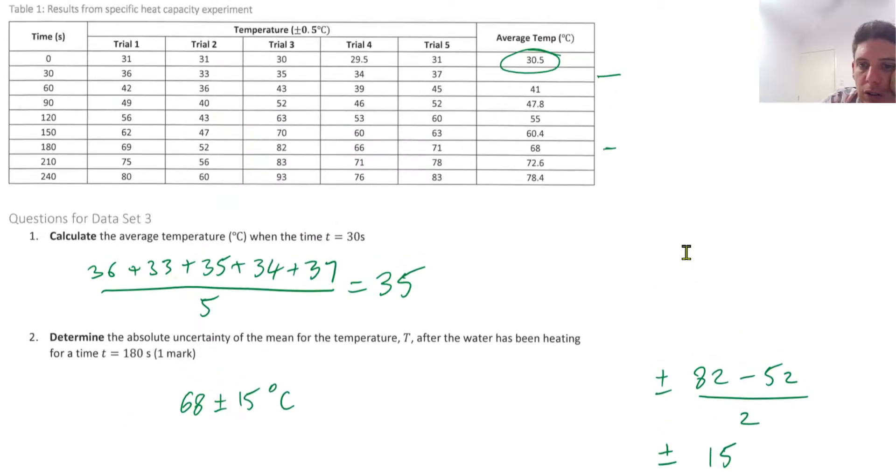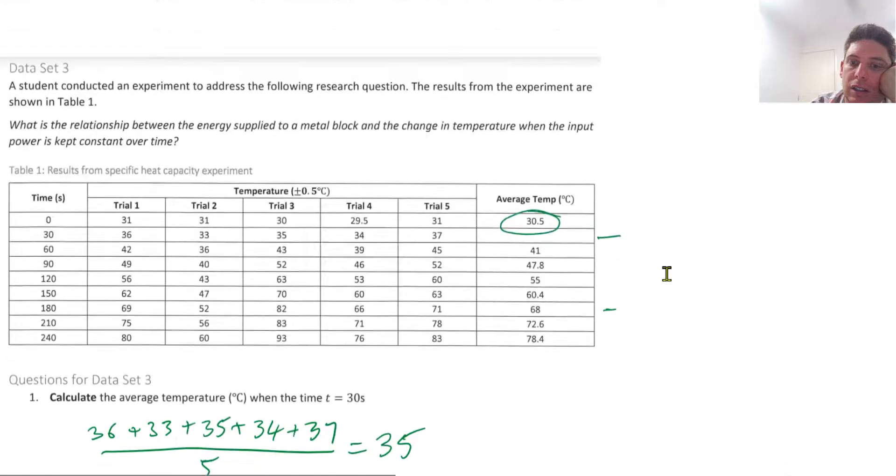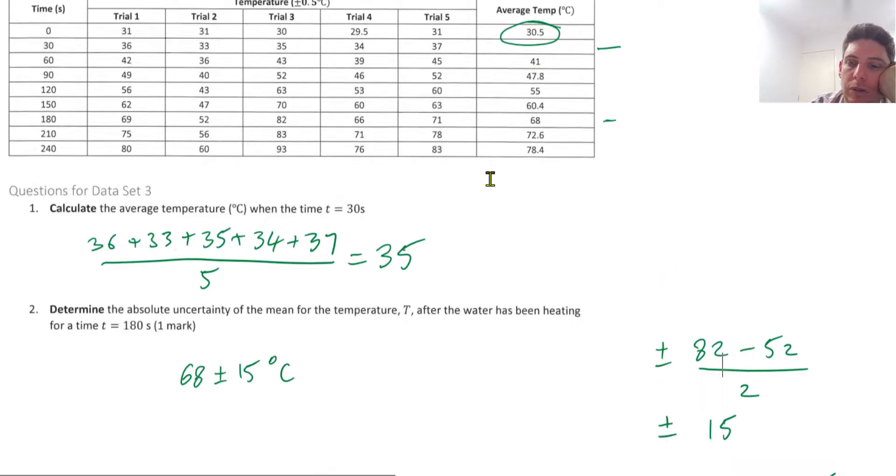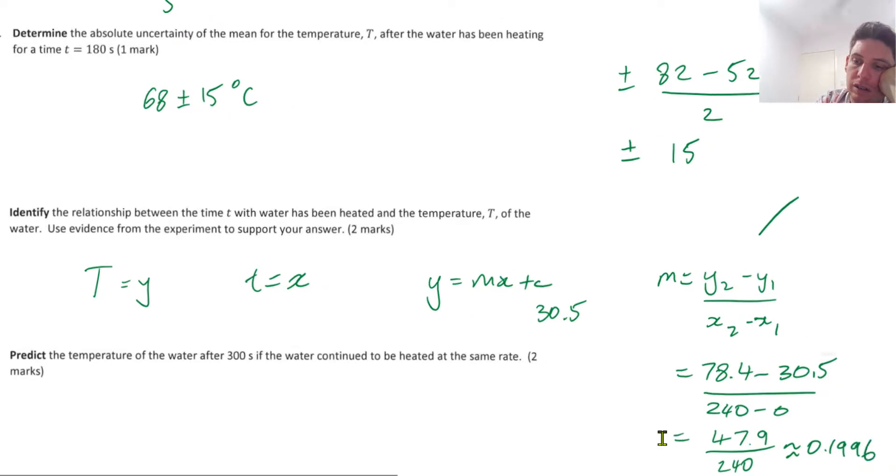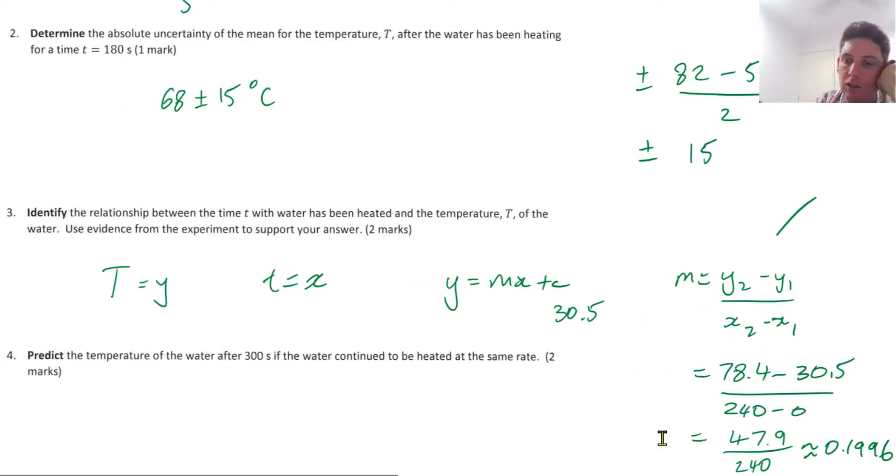So 78.4 minus 30.5 divided by 240 minus 0. So on average it's going up this amount per second and that's our gradient.